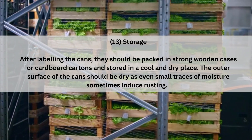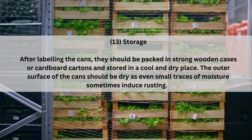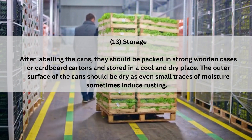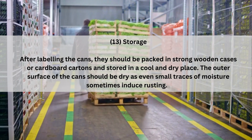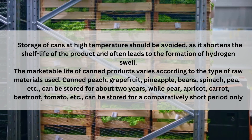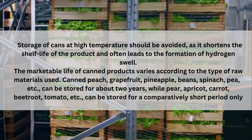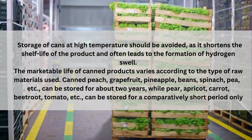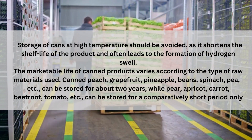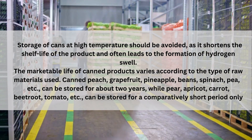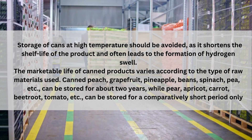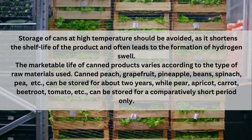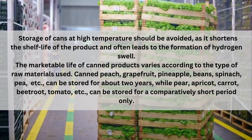Storage: After labeling the cans, they should be packed in strong wooden cases or cardboard cartons and stored in a cool, dry place. The outer surface of cans should be dry, as small traces of moisture can induce rusting. Storage of cans at high temperatures should be avoided, as it shortens the shelf life of the product and often leads to the formation of hydrogen gas. The marketable life of canned products varies according to the type of raw material. Canned peaches, grapefruit, pineapple, beets, spinach, etc. can be stored for about 2 years, while peas, apricots, carrots, beetroot and tomatoes have a comparatively shorter shelf life.